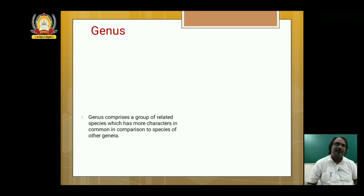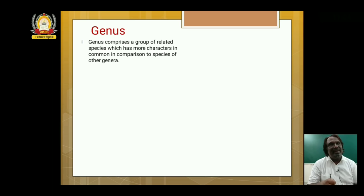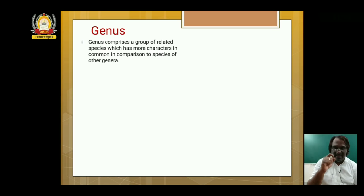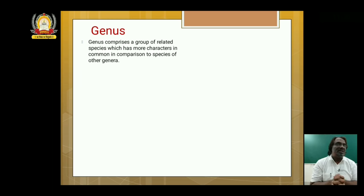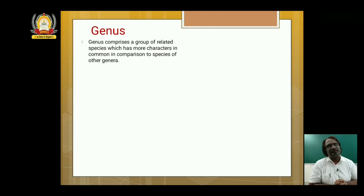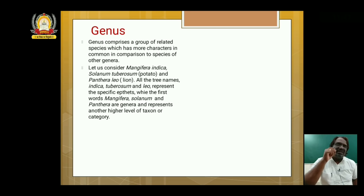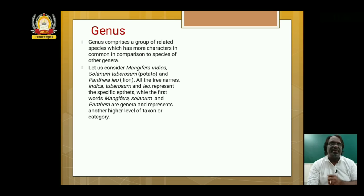Genus. Human beings have the genus name Homo. Every organism has a genus name. The first name in binomial nomenclature is the genus. Genus consists of a group of related species which has more characters in common in comparison to species of other genera. Let us consider Mangifera indica — you know it is a mango tree. Solanum tuberosum is the potato plant, and Panthera leo is the lion.